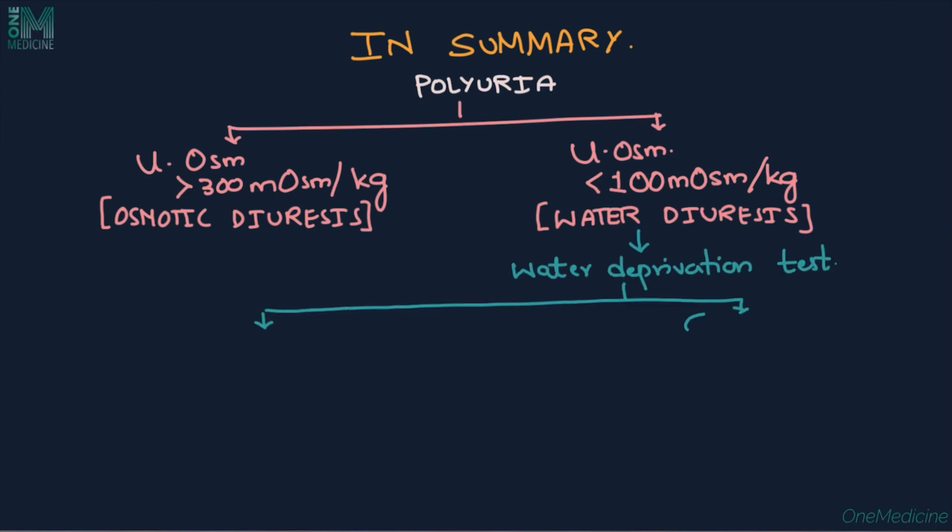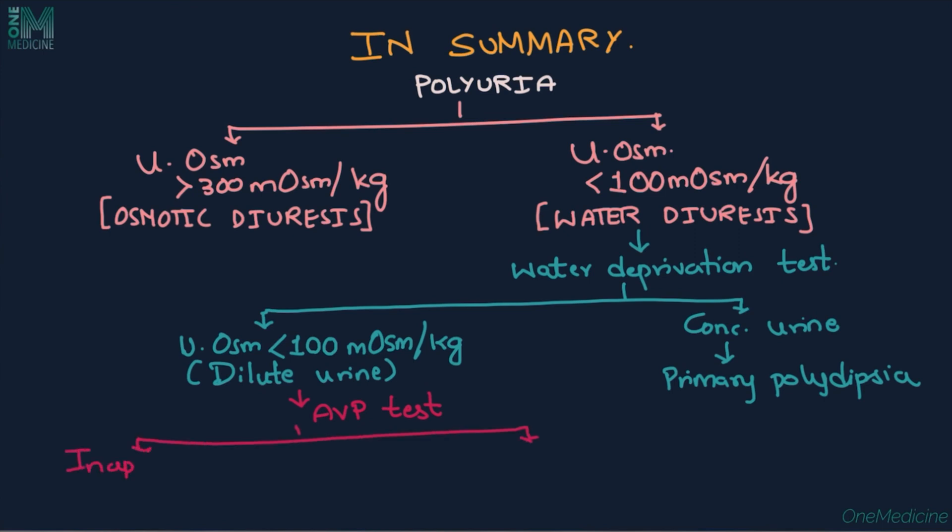An appropriately concentrated urine is suggestive of primary polydipsia, whereas if the urine osmolality remains less than 100 milliosmol per kg, then the patient must be subjected to arginine vasopressin response. If the patient is found to have inappropriately dilute urine, that is suggestive of nephrogenic diabetes insipidus, whereas if the urine is appropriately concentrated, that is suggestive of central diabetes insipidus.